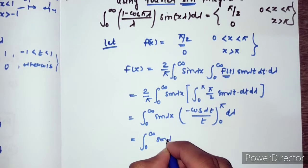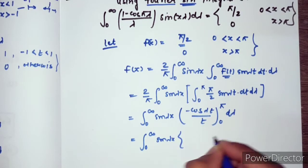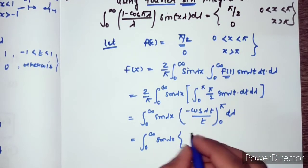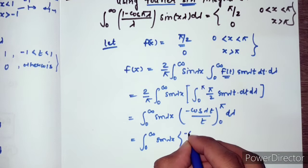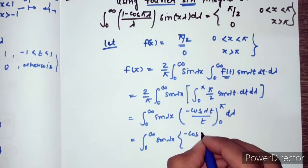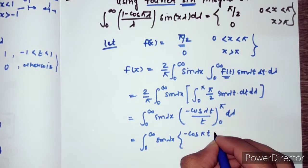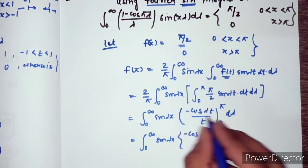Putting in the limits, from 0 to infinity we have sin(λx) times [minus cos(λπ) minus (minus cos(0))].